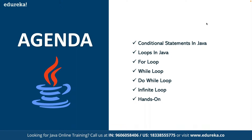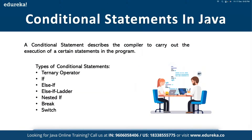Java is one of the most popular programming languages out there, and it has been one of the most secure deployments available. As part of conditional statements in Java, we will first discuss how the compiler carries out execution of certain statements in a program. The types of conditional statements we'll cover include ternary, if, else-if, nested if, break, and switch.